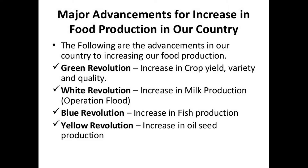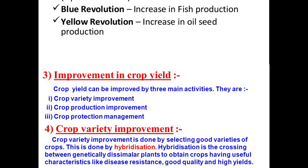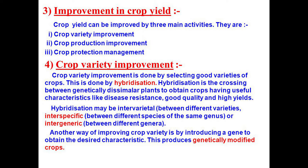Animal husbandry means rearing of different types of animals for the purpose of food. Simply increasing grain production for storage in warehouses cannot solve the problem of malnutrition and hunger — people should have money to purchase the food. Food security depends on both availability of food and access to it. Crop yield can be improved by three main activities: first, crop variety improvement; second, crop production improvement; and third, crop protection management.